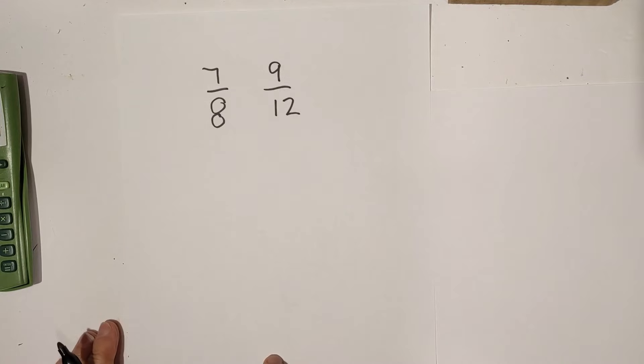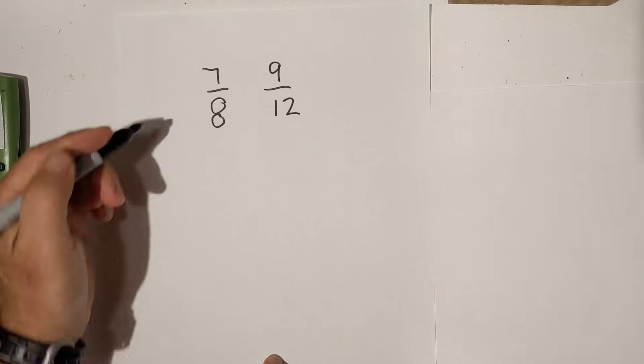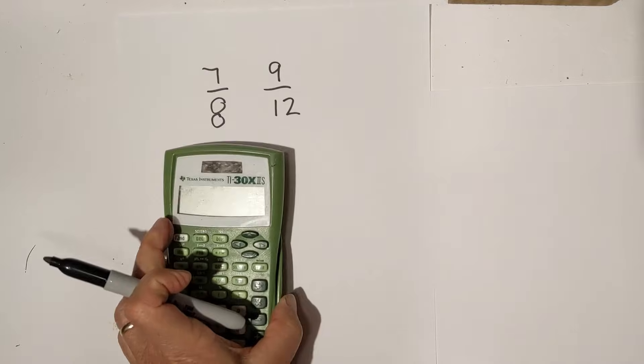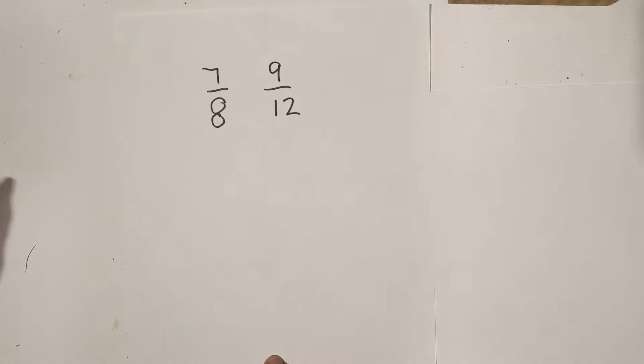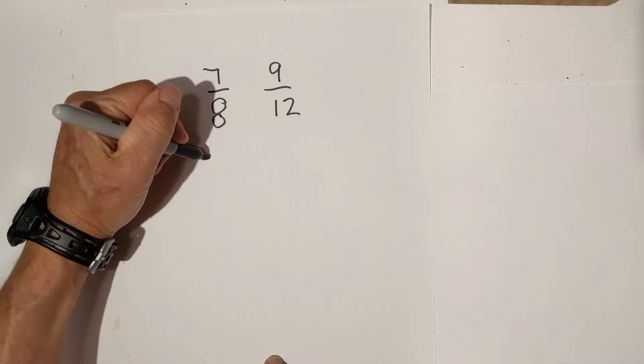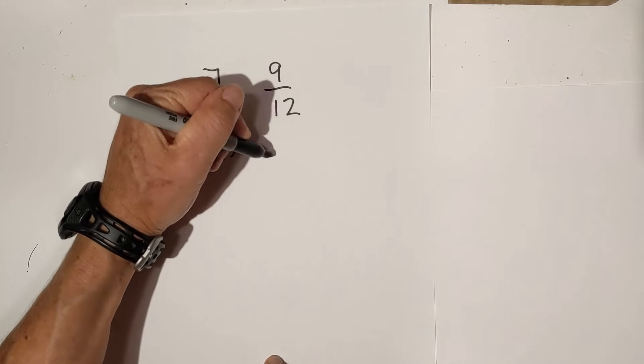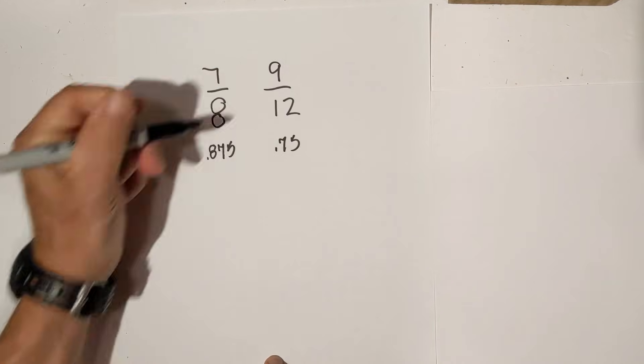How about this one? 7 eighths and 9 twelfths. I'm going to convert it to a fraction. When you divide 7 divided by 8, yes I did use a calculator. Anyway, 7 divided by 8 is 0.875 and 9 divided by 12 is 0.75.